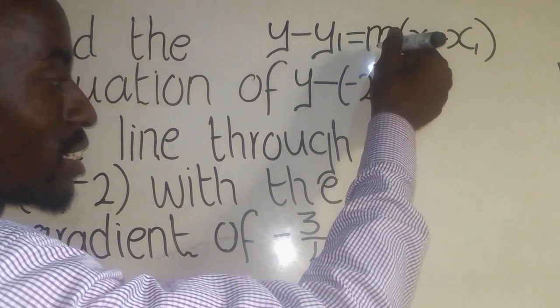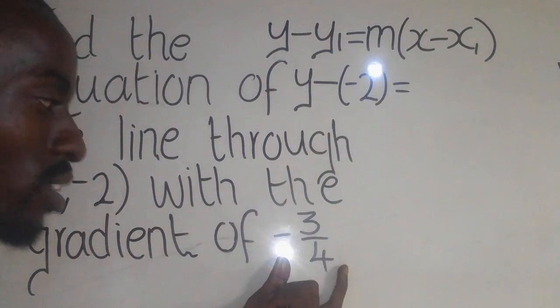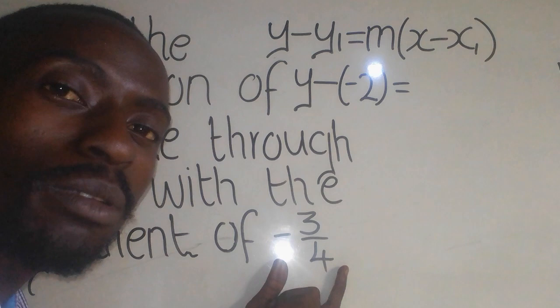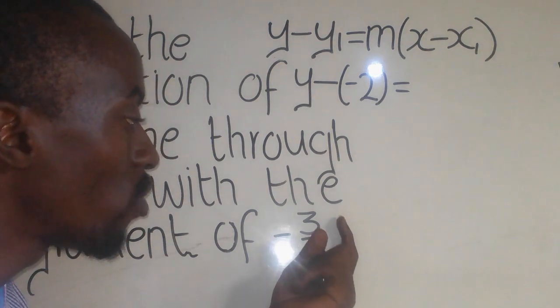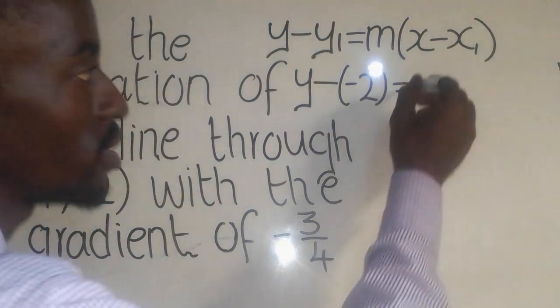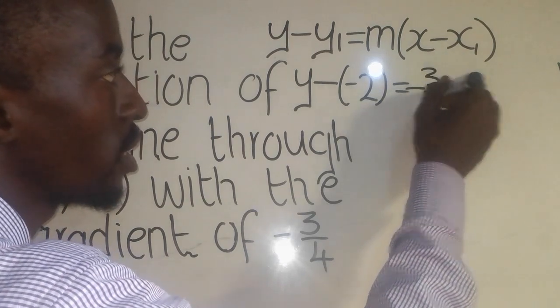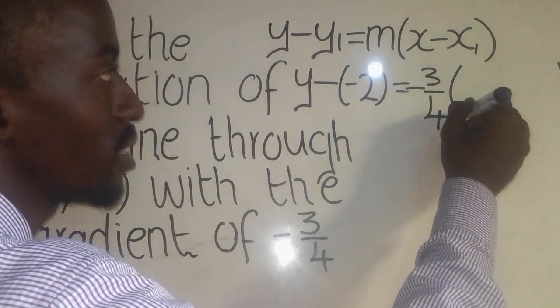What is m? m is the gradient. This one, which is this one here, the gradient. The gradient simply means the change in y over the change in x. So it is negative 3 over 4 there, like this.